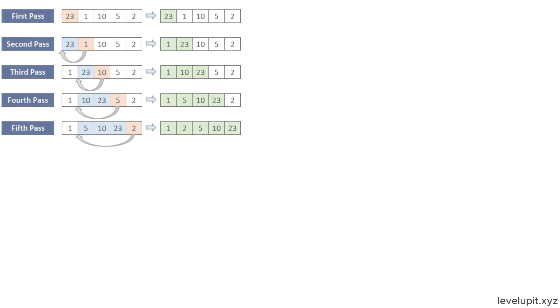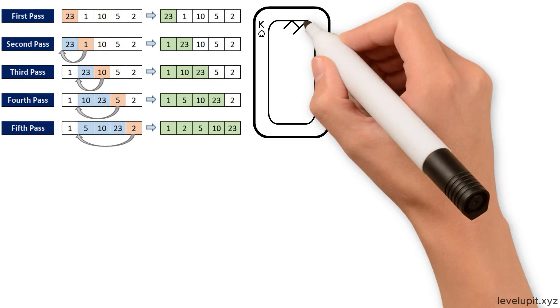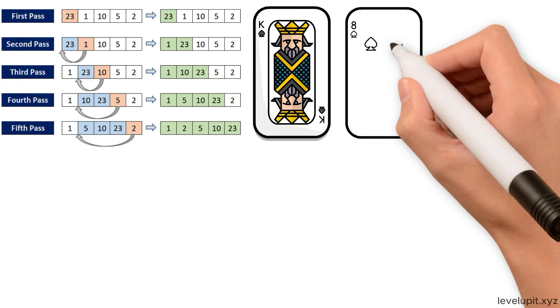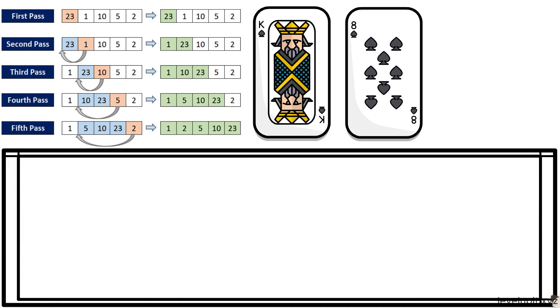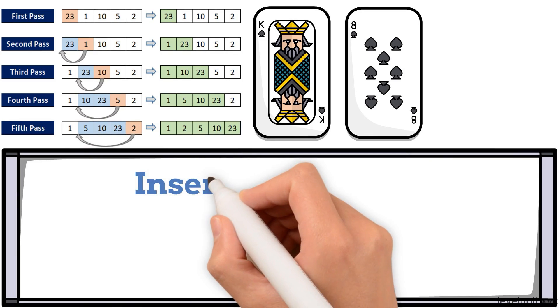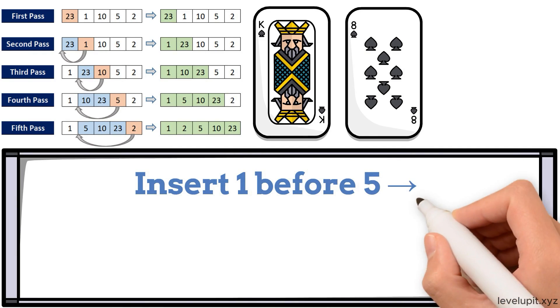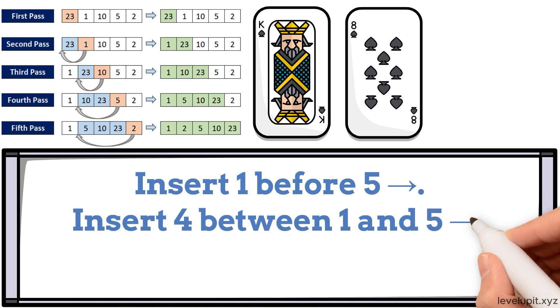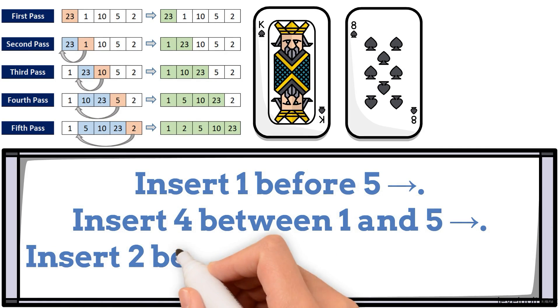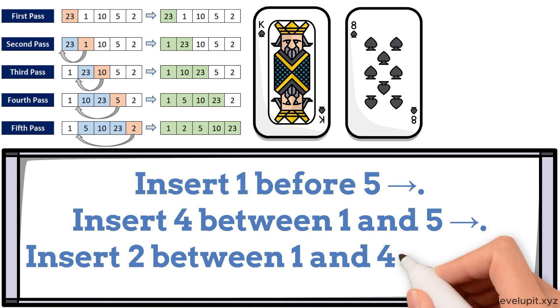Insertion sort feels like how people sort playing cards. Start with the first card as sorted. Take the next card and insert it into the correct spot among the cards in your hand. Start with 5. Insert 1 before 5. Insert 4 between 1 and 5. Insert 2 between 1 and 4 to get 1, 2, 4, 5.